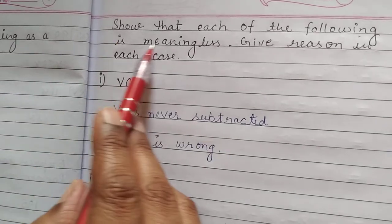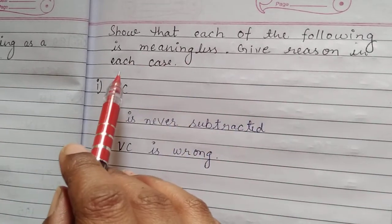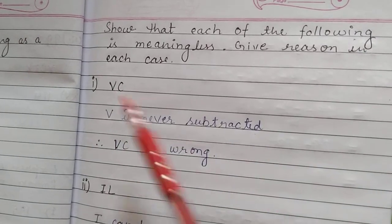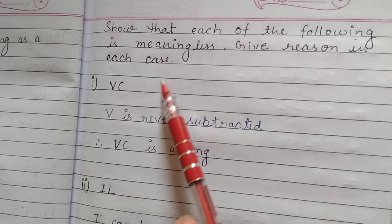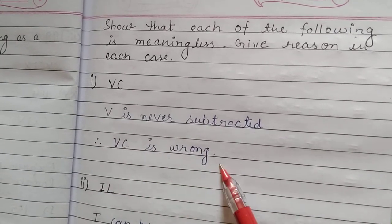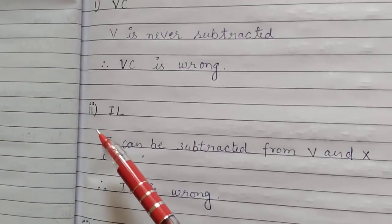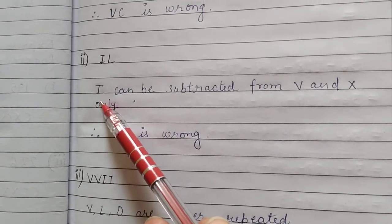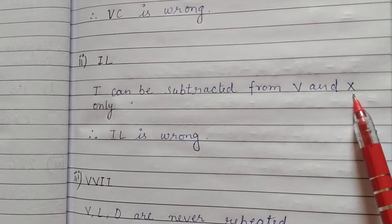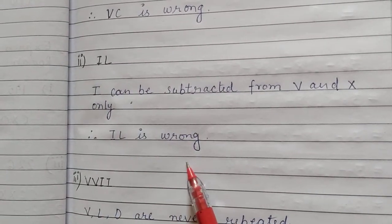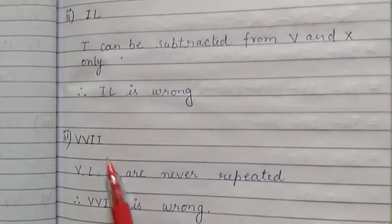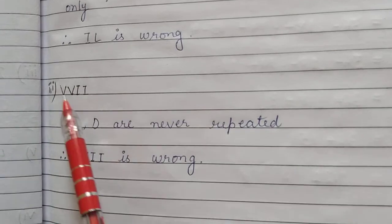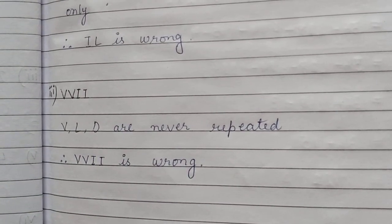The next question asks: show that each of the following is meaningless and give reason. For VC: V is never subtracted, so CV is wrong. For IL: I can be subtracted from V and X only. Here it is with L, so IL is also wrong. For VV: V, L, D are never repeated. This is a repetition of V, so VV is also wrong.